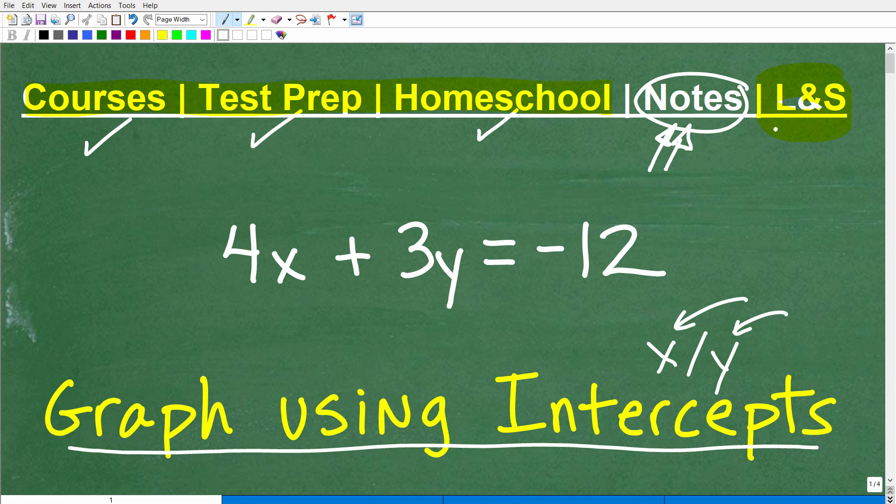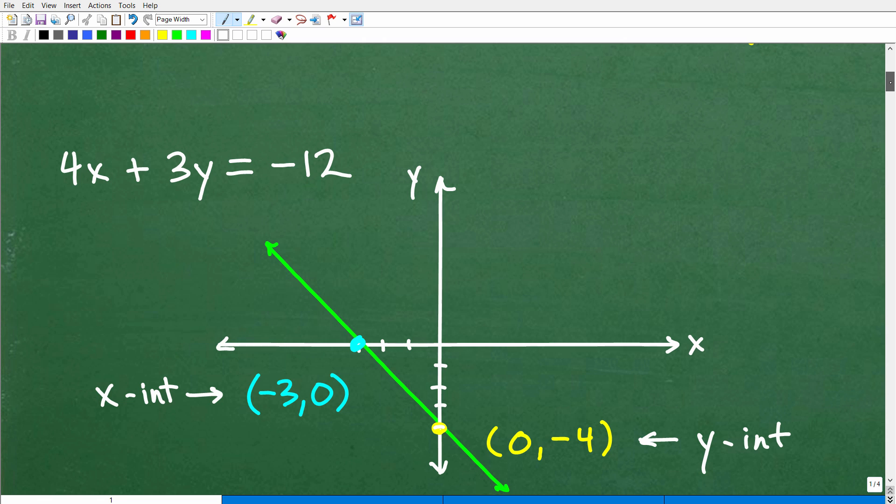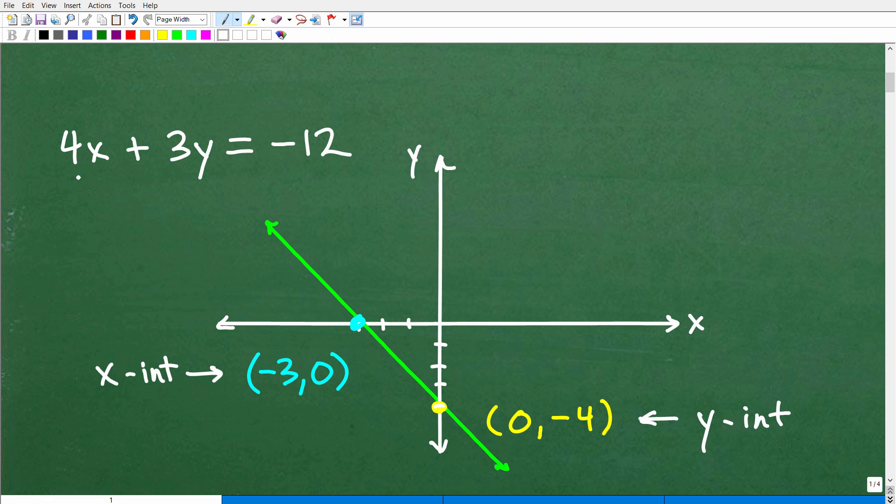And if this video helps you out, don't forget to like and subscribe. Okay, so let's go ahead and get into this. I'm going to show you the graph to this linear equation and the intercepts. So here is the line, 4x plus 3y is equal to negative 12, or this linear equation. Here is the graph in green.